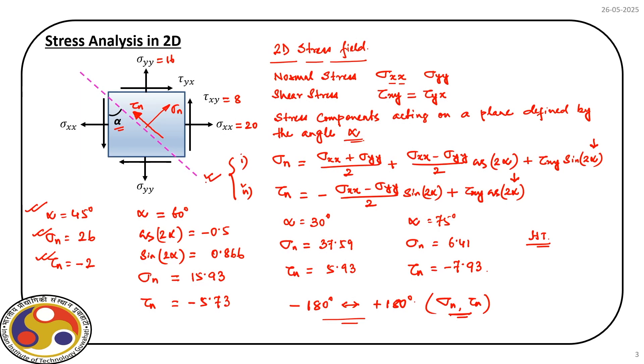These two equations give us the clue: by varying alpha, we see the variations of sigma_n and tau_n. From that analysis we can identify the plane along which sigma_n or tau_n is worst. We then select a material that can withstand that level of stress or a combination of sigma_n and tau_n. As we progress in this course, we will define certain failure theories based on combinations of normal and shear stresses.